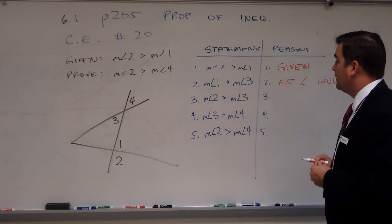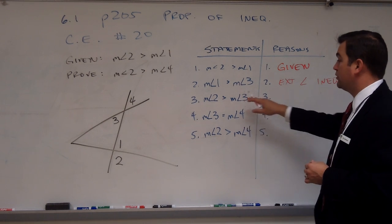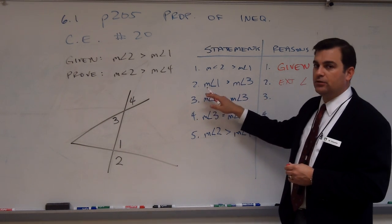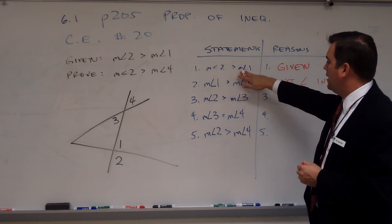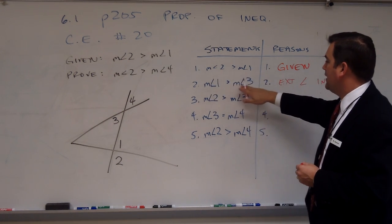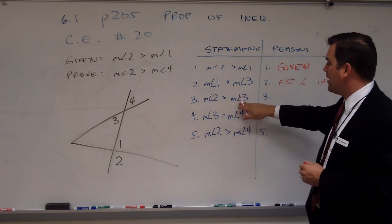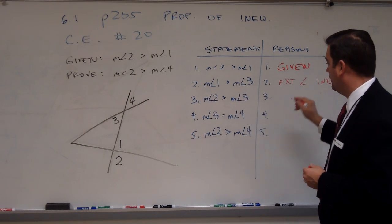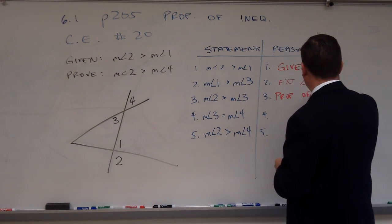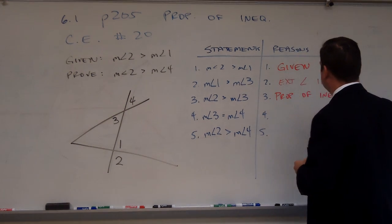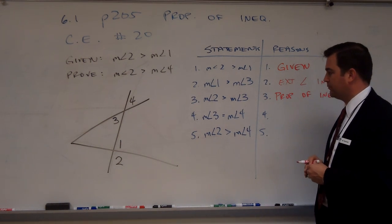Statement 3: the measure of angle 2 will be greater than the measure of angle 3. This is very similar to the transitive property. If angle 2 is greater than angle 1, and angle 1 is greater than angle 3, then the measure of angle 2 must be greater than the measure of angle 3. The reason I'll put here is the property of inequality, which is very similar to the transitive property we learned in chapter 2.